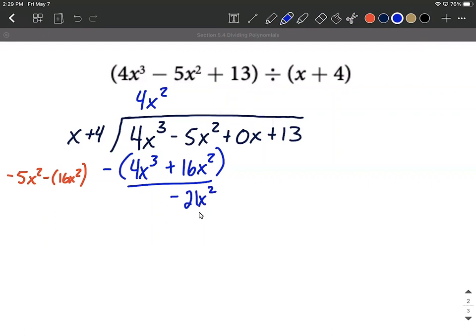All right, now that we've subtracted down we want to bring down that next term, even if it is 0x, and then kind of start again. So we think x multiplied by what makes -21x²? Well, x multiplied by -21x will make -21x². But then we also need to do -21x multiplied by 4, which is going to make -84x.